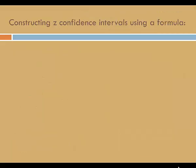How do we use z of alpha over 2 to construct z confidence intervals? Let's look at an example using a formula.